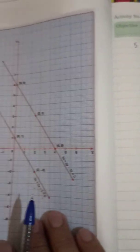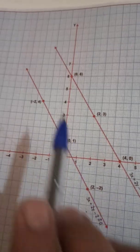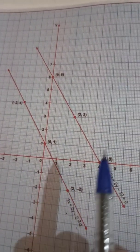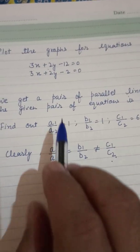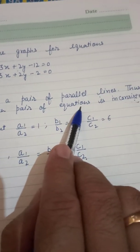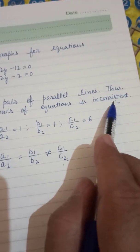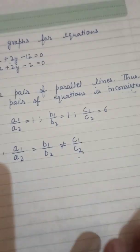When we plot the graph, we find that the lines are parallel. Since they do not intersect each other, there is no solution. Therefore, the given pair of equations is inconsistent.